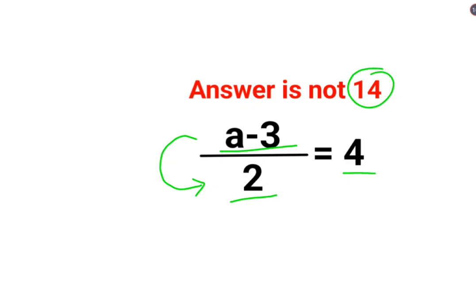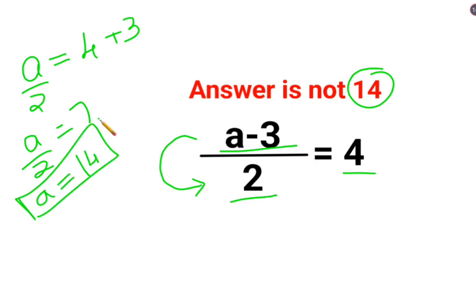A lot of people thought that the answer is 14 because they thought we will shift the 3 on this side. So 4 plus 3 and A upon 2. So we have A upon 2 equals 7. So A equals 14 by multiplying 2 on both sides. That is incorrect.